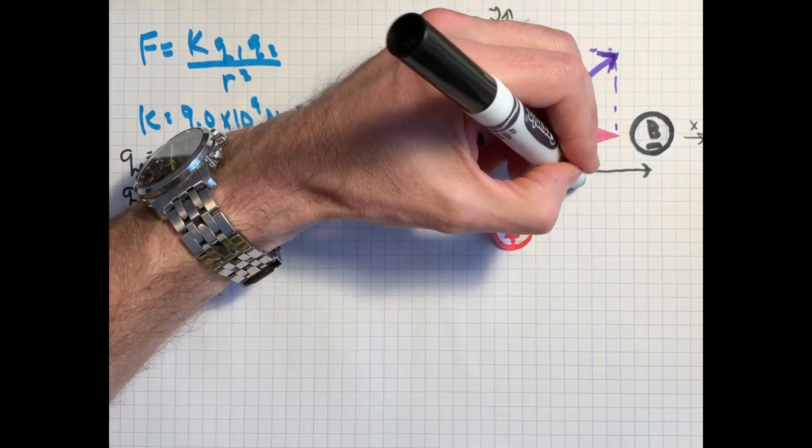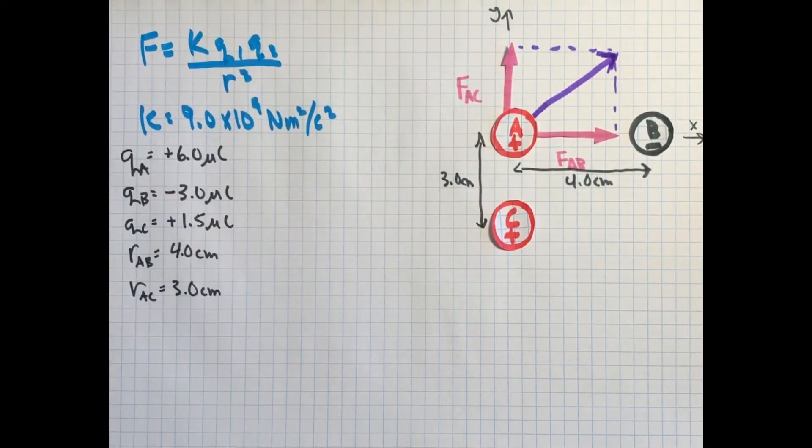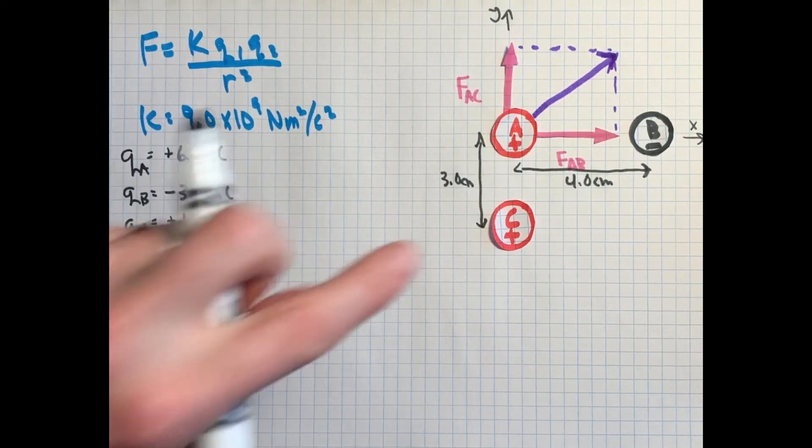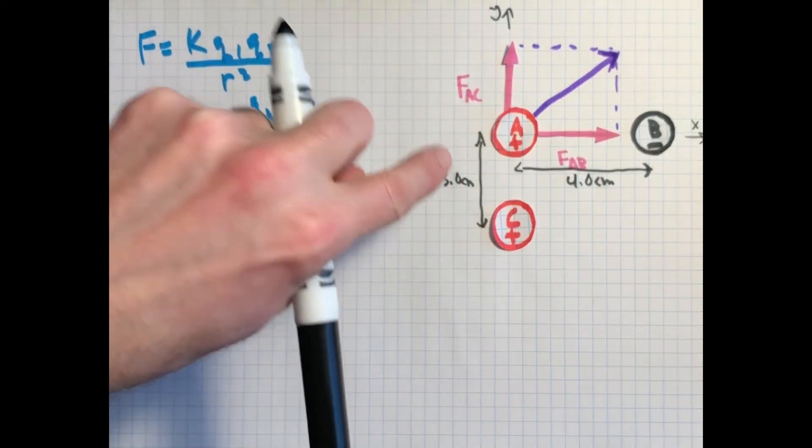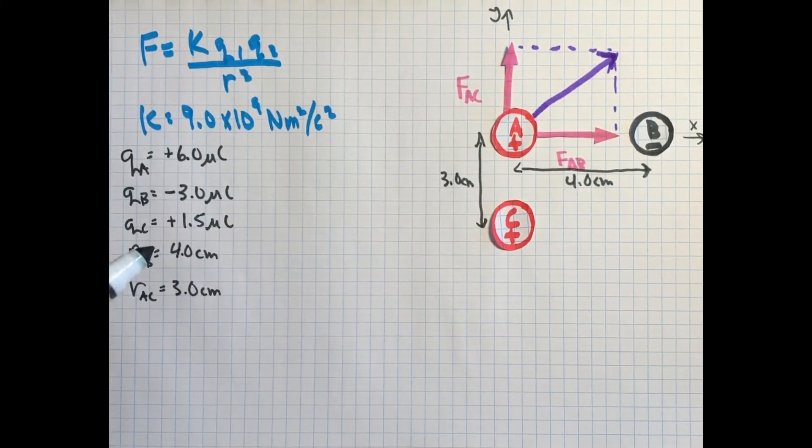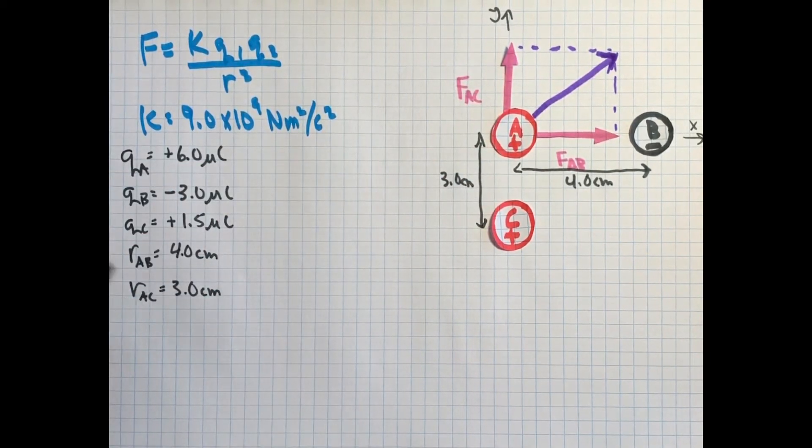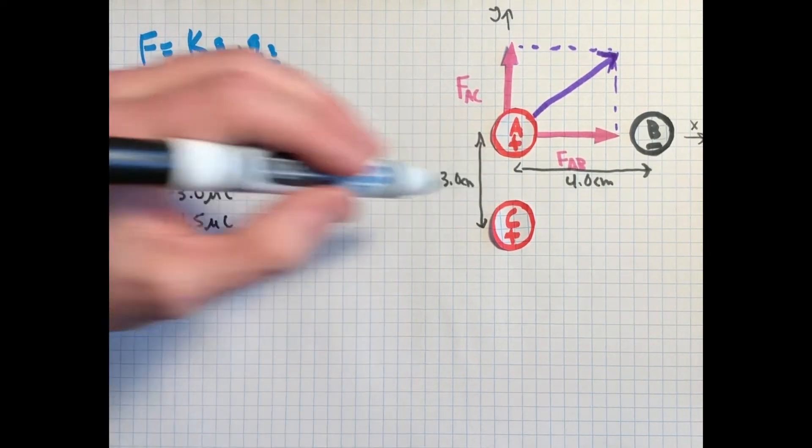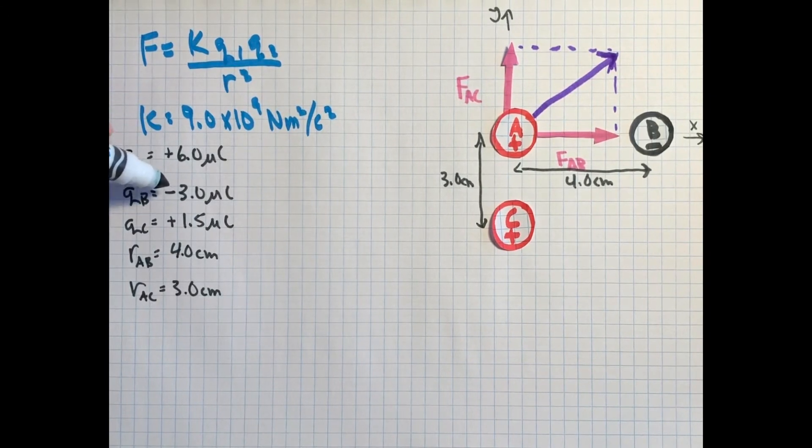Which force is going to be bigger? That's a question you might want to ask yourself right now. A is closer to C, it's 3 centimeters away, not much difference than 4 centimeters, but C is also quite a bit small. It's half the size anyway, different sign, but half the size of B. So you might say, well, B is going to be much stronger then, since it's only a little bit further away, but it's got double the charge. But we'll see, because the 1 over r squared does mean that the distance apart makes a bigger difference than you sometimes think.